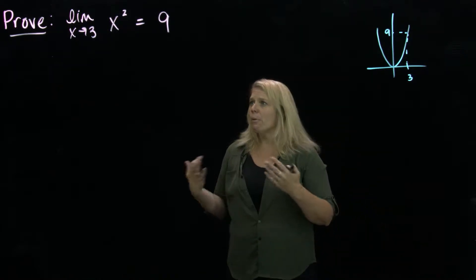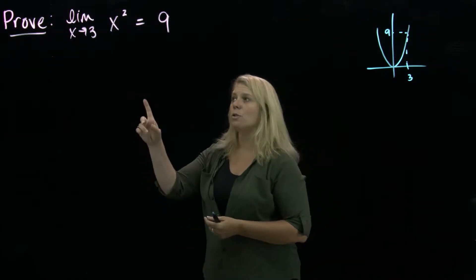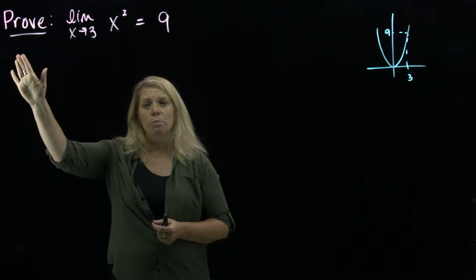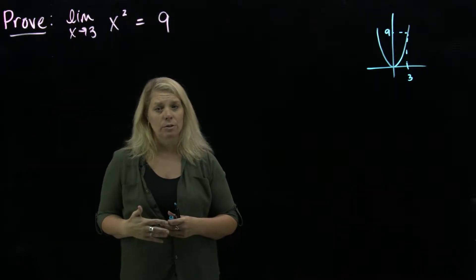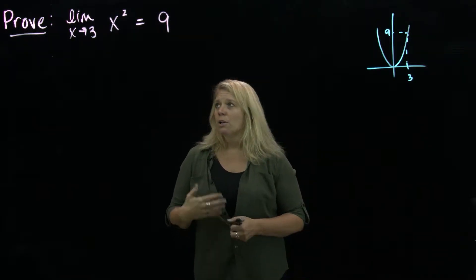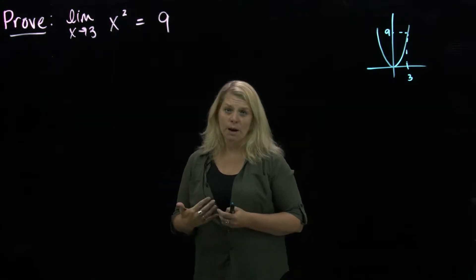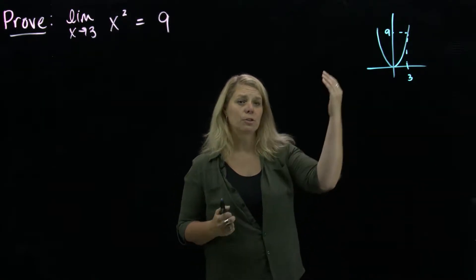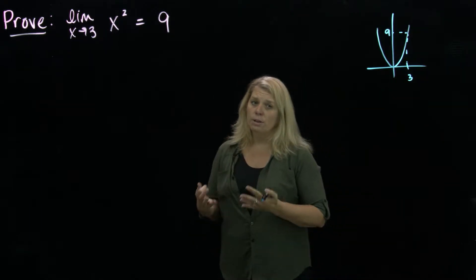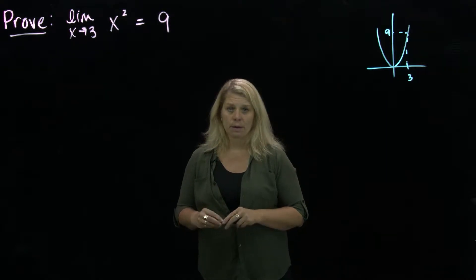We feel pretty confident that that is the right limit, but that's not what this asks us — it asks us to prove. When you see something that asks you to prove a limit, that's asking you to use the formal definition and really go through the proof. This is a harder problem because the graph is not a straight line; it's not symmetric on either side of x equals 3, so there's going to be a little more subtlety in the middle of this proof.